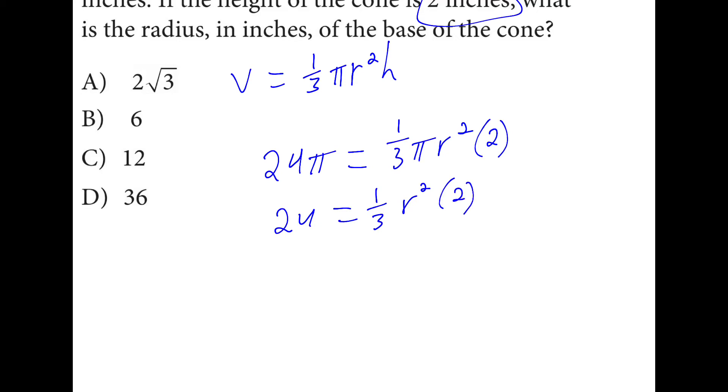If we multiply both sides by 3, we have 72 is equal to r squared times 2. If we divide both sides by 2, 36 is equal to r squared. Take the square root of both sides, and we found a radius.